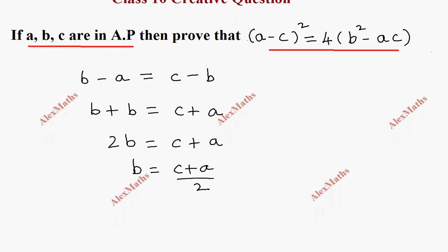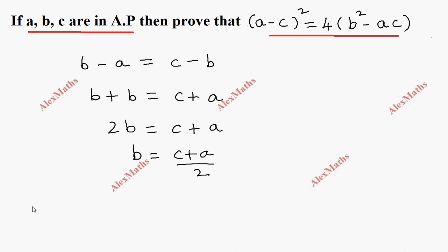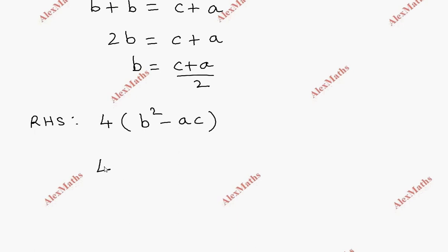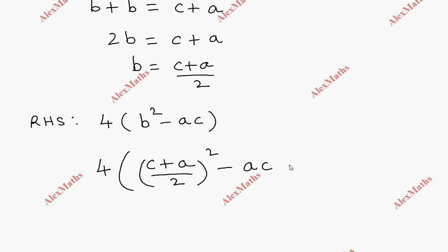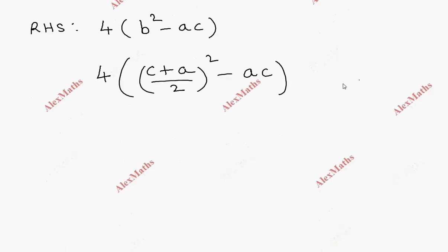Now, looking at the expression on the RHS, we have 4 into B squared minus AC. Substituting the value of B as (C plus A) by 2, we get 4 into (C plus A) by 2 whole squared minus AC.